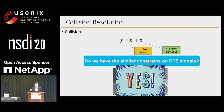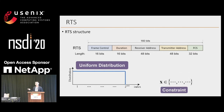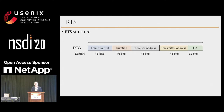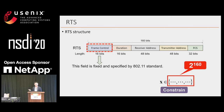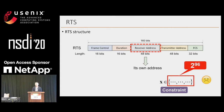The answer is yes. Here is the RTS frame architecture, and the total length is 160 bits. If all the bits were randomly distributed, the size of the constraint would be 2 to the power of 160, which is too large. But if we inspect each field of the RTS frame, they are not random. For example, the frame control is fixed by the standard, so the size decreases to 2 to the power of 144. And the receiver address is also fixed, so the size becomes 2 to the power of 96.